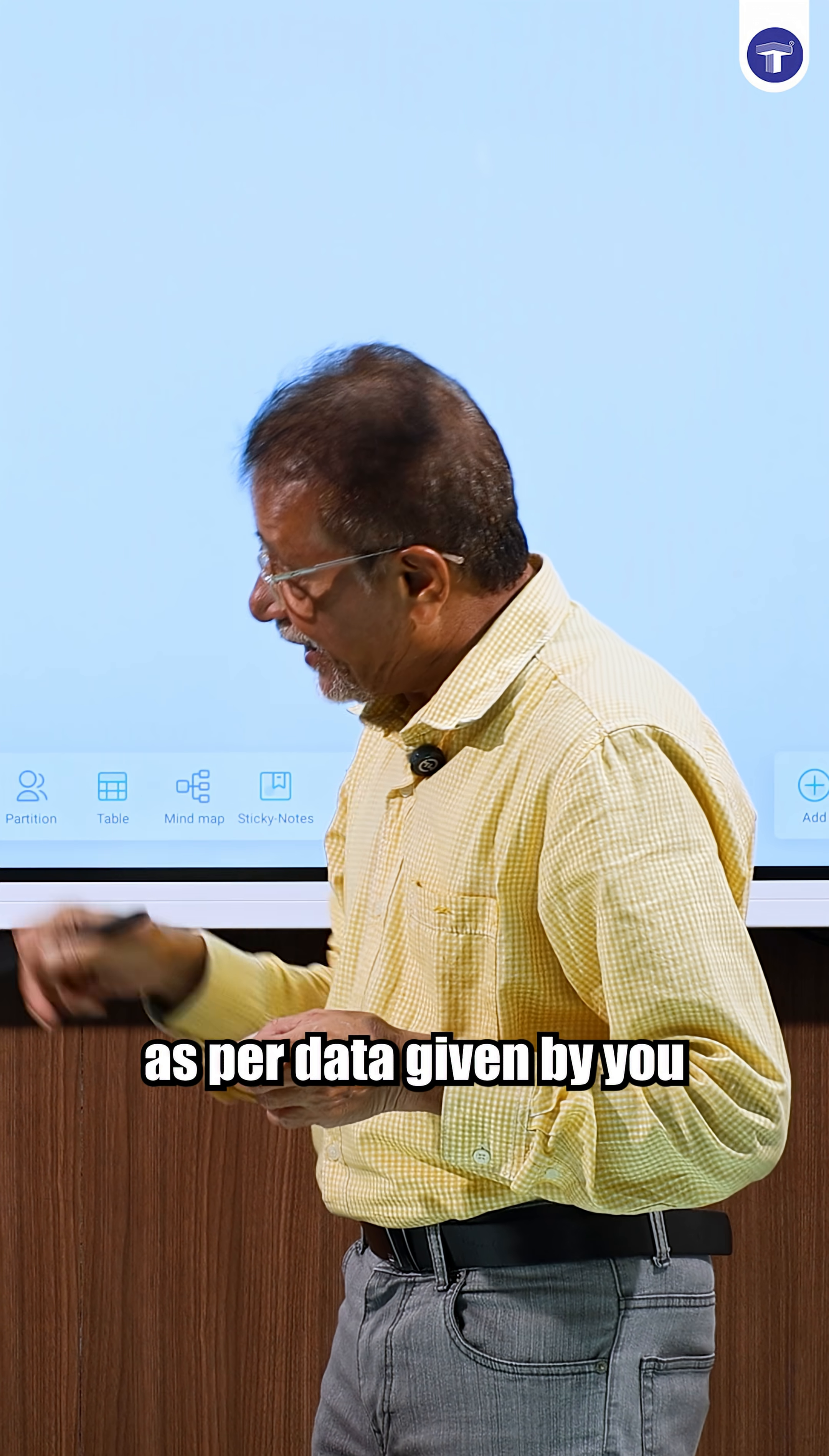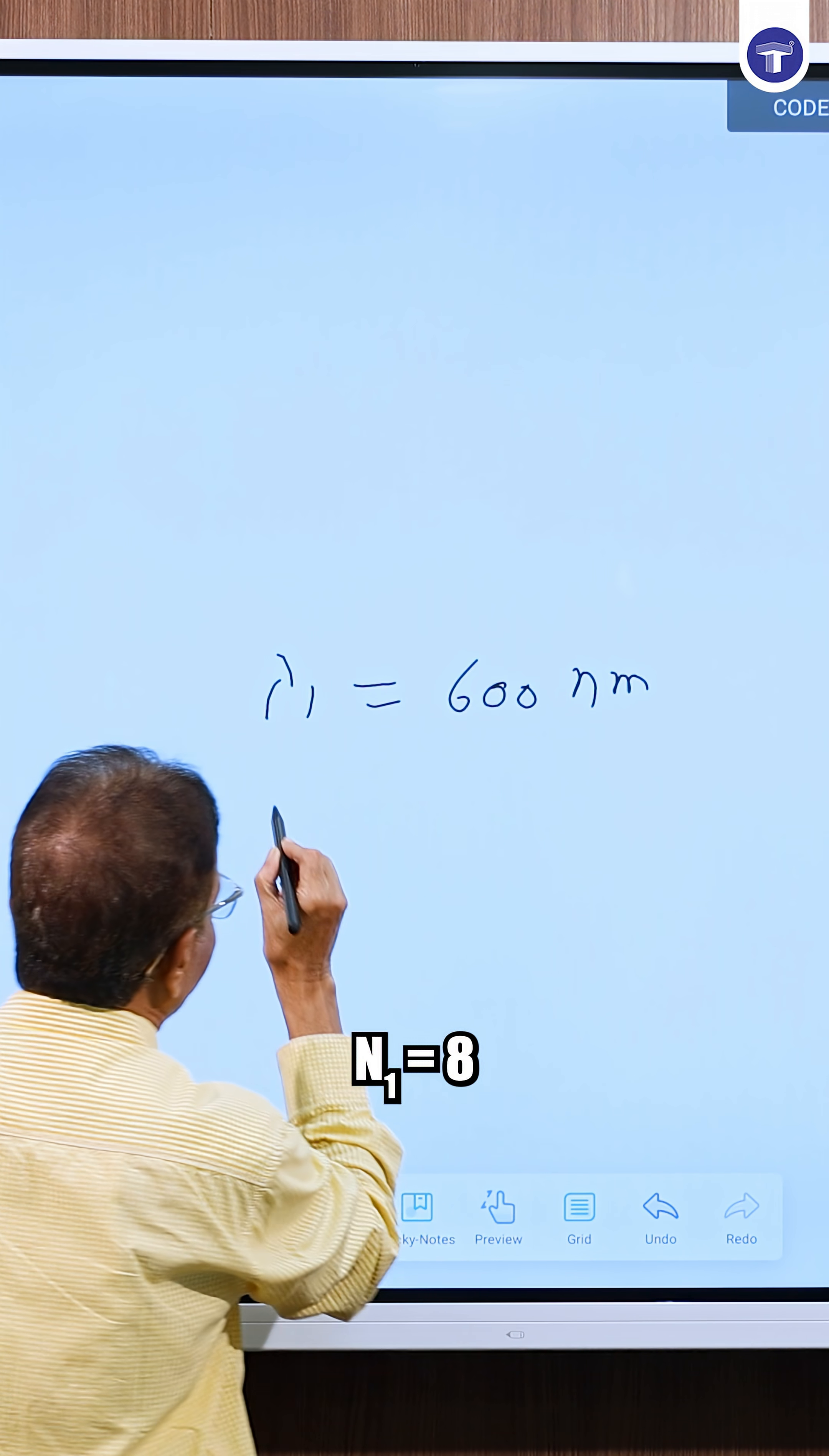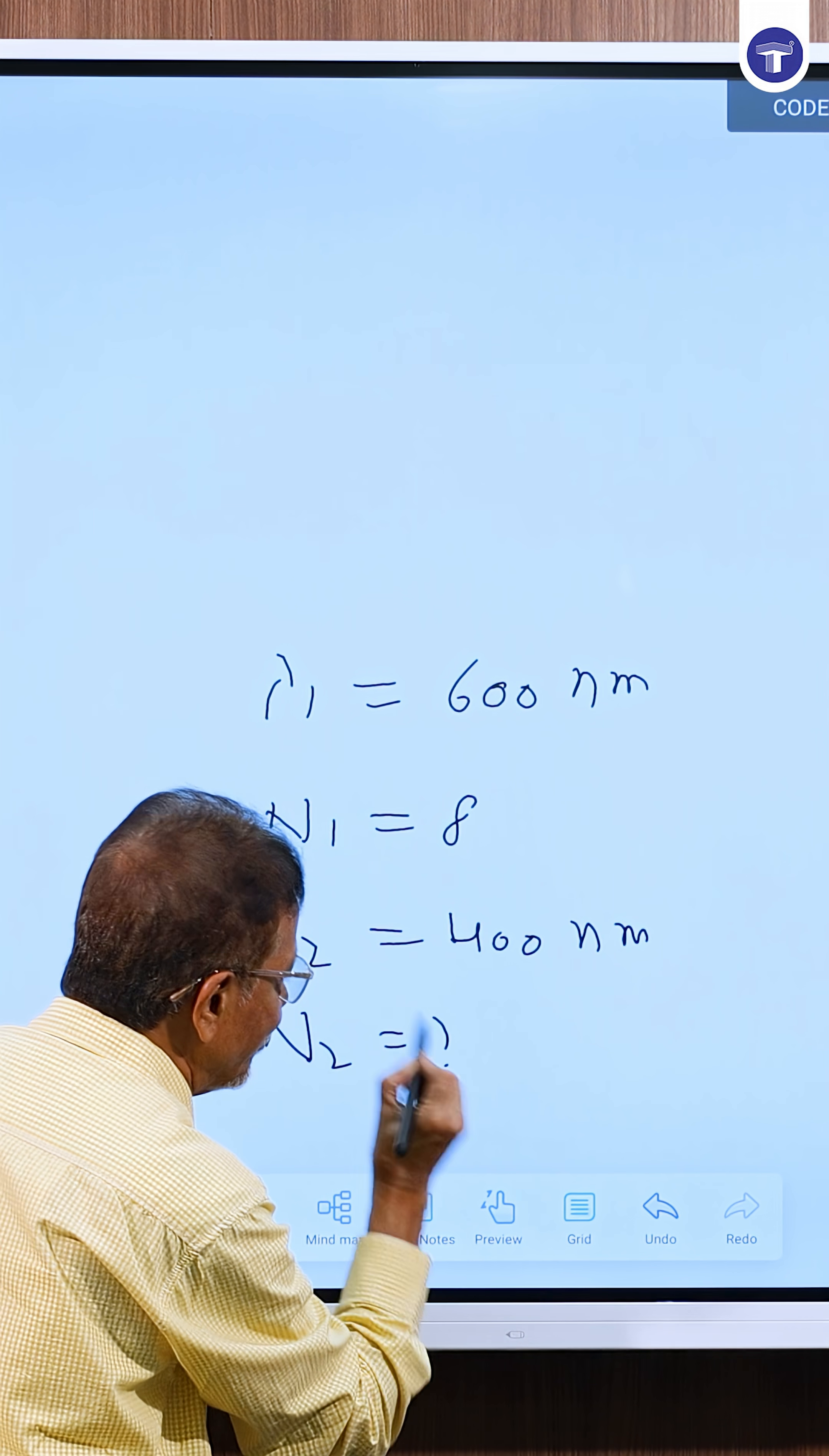As per the data given by you, lambda 1 is 600 nanometer and number of fringes n1 is equal to 8. If lambda 2 is 400 nanometer, then what will be the number of fringes? That is n2.